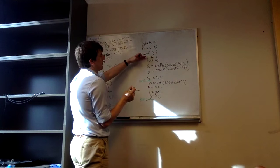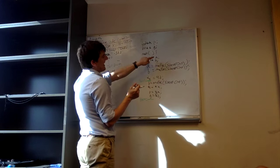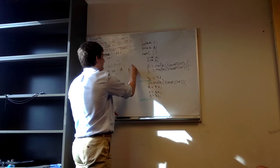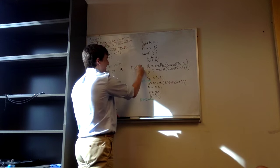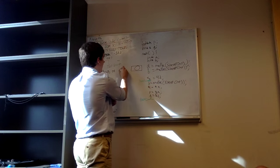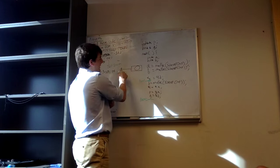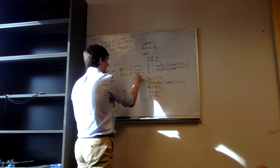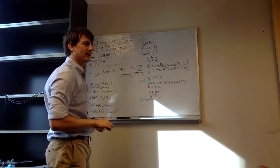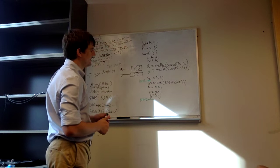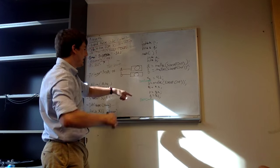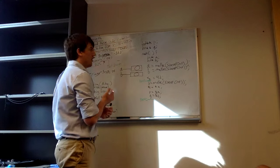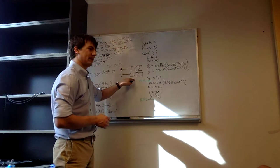Whenever we have a declaration, we're binding that name A. So we have a name A — it's a declaration, so there's going to be some location for that with a value in it. The location is the box, the value is the circle, and this line is going to bind that name A to that location. That's all that's done when we say int star A. This is part of C semantics — when you declare something, there's always a location bound to that name.